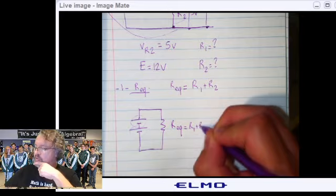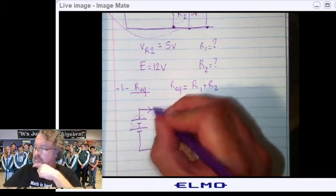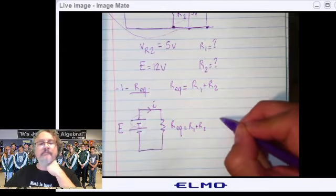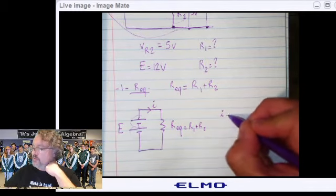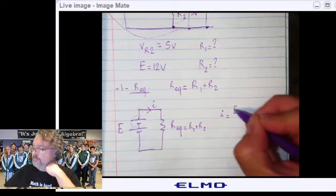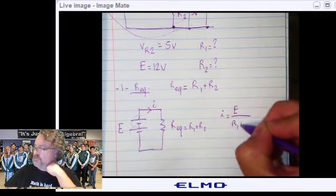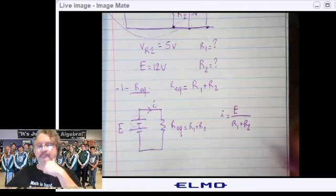So, what is the current right here? What is the current I? Well, according to Ohm's law, I, it's going to be equal to E, the voltage, over the equivalent resistance, which is R1 plus R2.